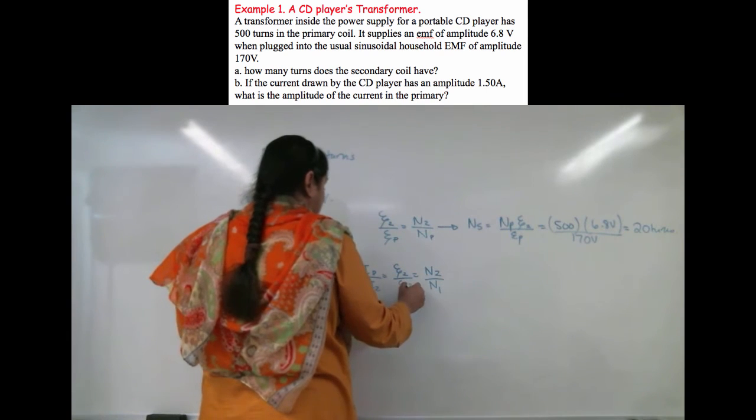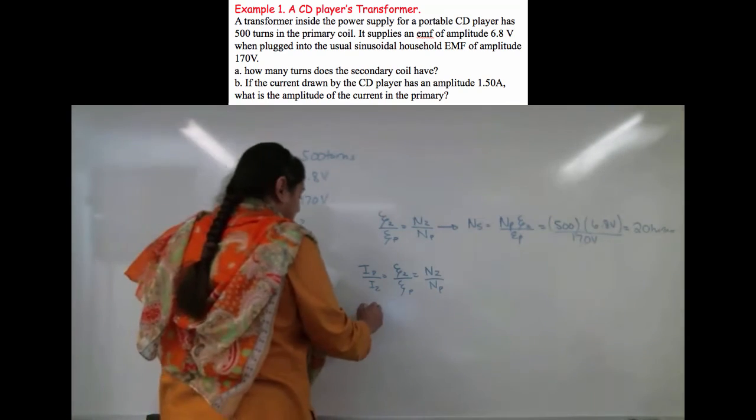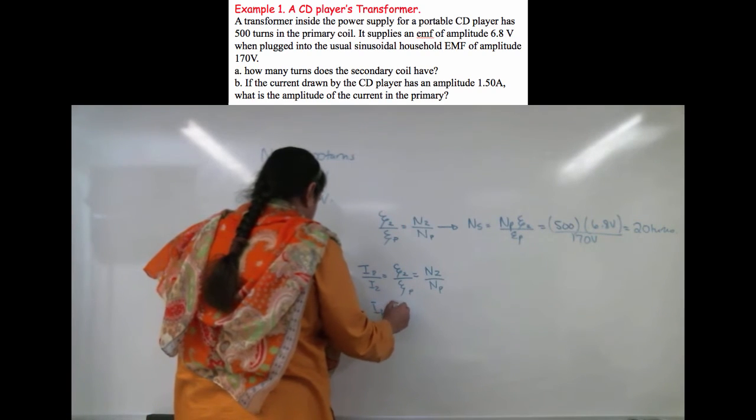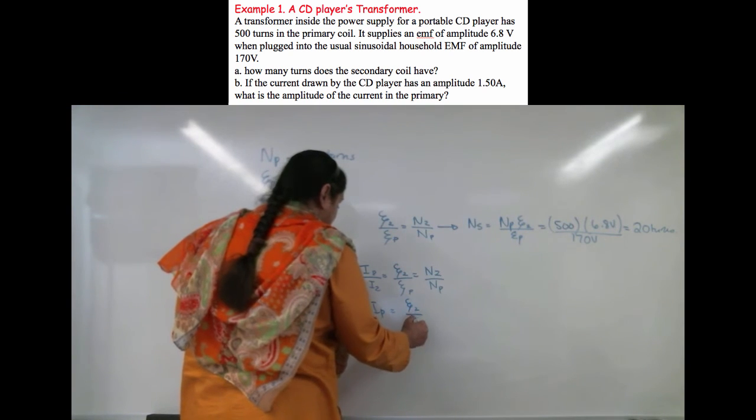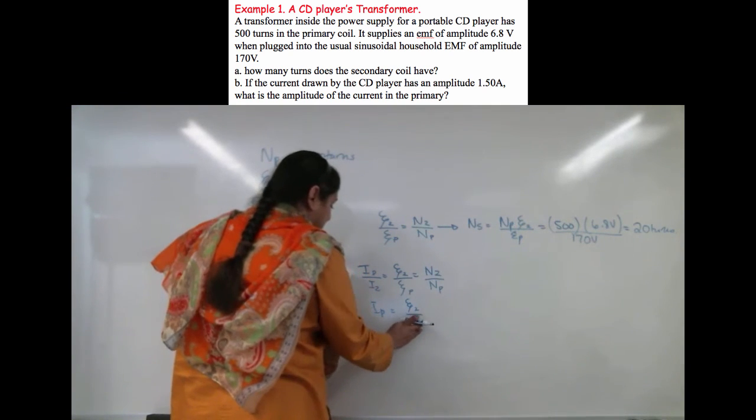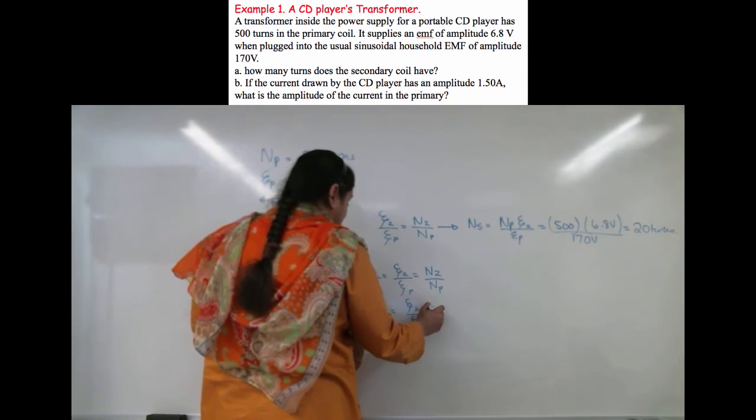I can do I1 over I2 equals E2 over E1, which equals N2 over N1, or primary and secondary however you're more comfortable. So this implies I primary will equal E2 over E primary times I2.